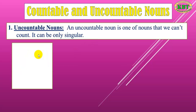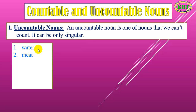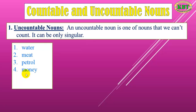Let's see some uncountable nouns. For example: water. We cannot say 'one water, two water.' But we can measure water — like 'one liter of water, two liters of water.' Meat is also uncountable, but we can measure it in kilograms.